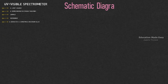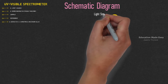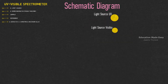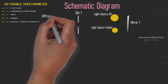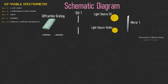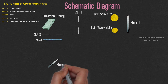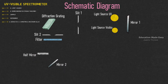Now let us draw the schematic diagram of UV Visible Spectrometer. There are two light sources: light source UV and light source visible. Then we have mirror 1. Next we have slit 1. After the slit we have a diffraction grating. After the diffraction grating we have slit 2. After slit 2 we have a filter. After the filter we have mirror 2, a half mirror, mirror 3, and mirror 4.